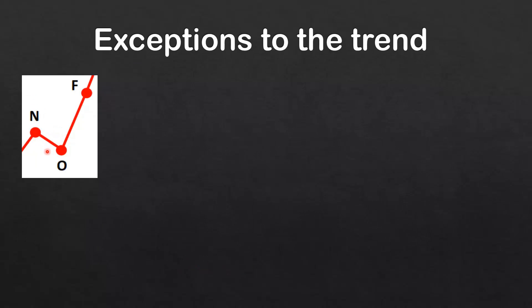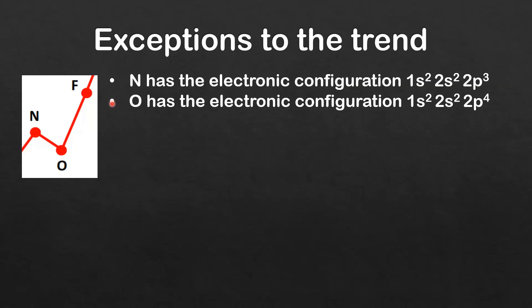Next we'll have a look at the reason for the decrease in ionization energy from nitrogen to oxygen. Nitrogen has the electronic configuration 1s² 2s² 2p³. Oxygen has the electronic configuration 1s² 2s² 2p⁴.